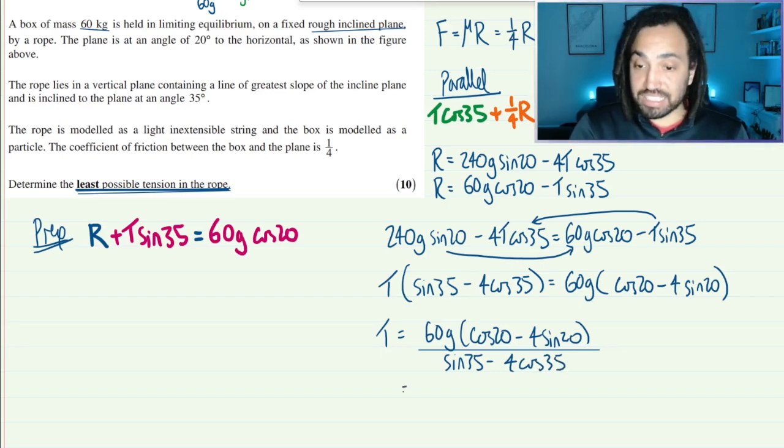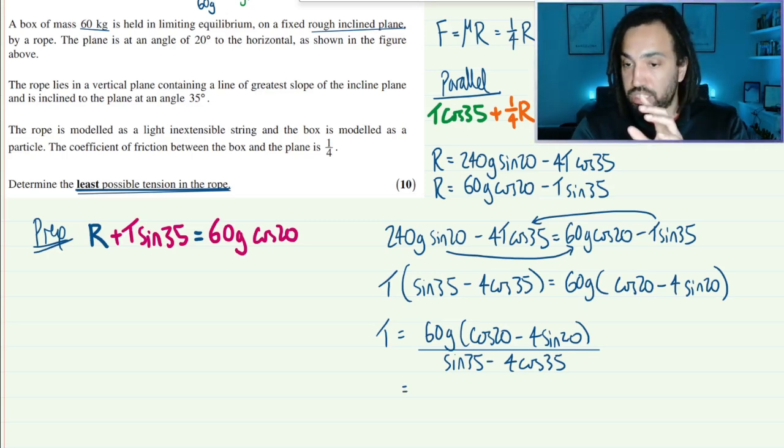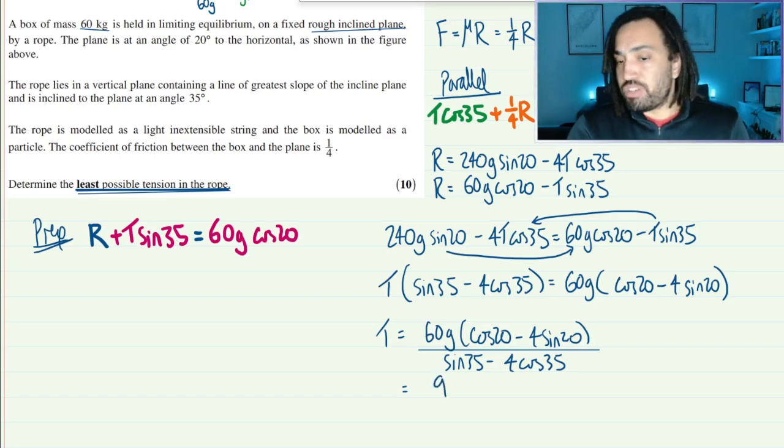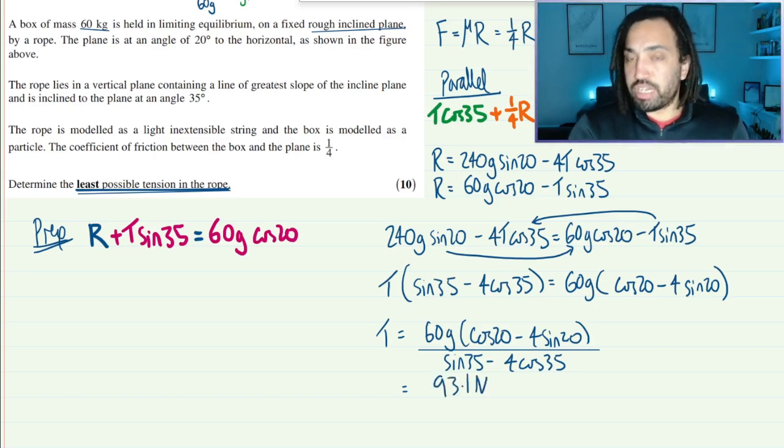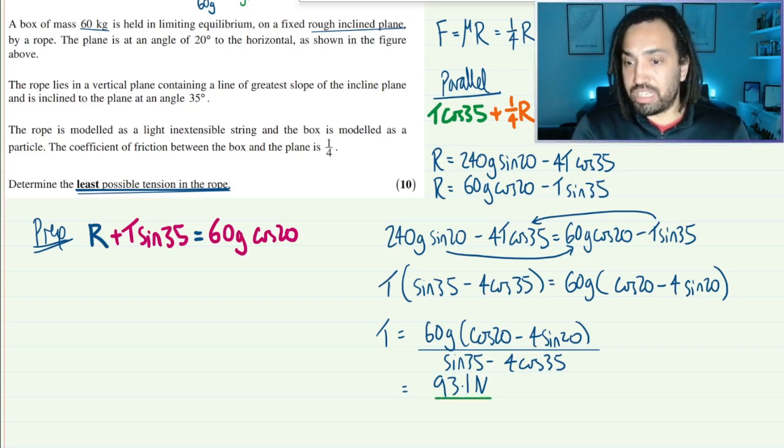So I get T equals 60g cos 20 minus 4 sine 20 all over sine 35 minus 4 cos 35. And that is equal to, just let me work this out, 60g times by cos 20 minus 4 sine 20, and that is, I think that's about 93.1 I reckon, roughly. I don't know. I don't have a calculator but I think that's about right. Let me know if you got that right.